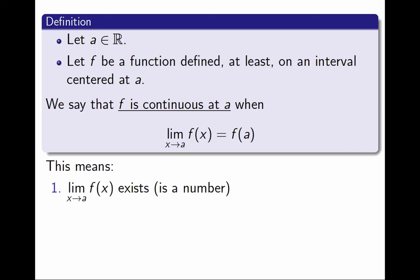To be very explicit, this definition means three things. 1. The limit must exist, and therefore be a number. 2. The function must be defined. And 3. The limit must be equal to the value of the function. Notice that both the limit and the function must be the same number. So, for example, if they both do not exist, then they do not satisfy the definition.